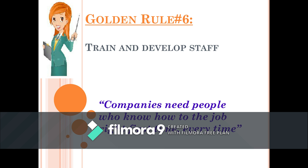Golden rule number six: train and develop staff. To meet GMP requirements, it is essential to have the right people doing the right job. This includes basic training on the theory and practice of GMP, as well as specific training relative to their role. It is also important to ensure that training requirements are highlighted as part of the change control system — for example, if we install a new piece of equipment, employees must know how to use it. Training is required, and you should check that training is complete during validation.